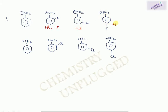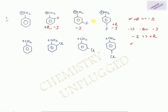At the para position there is again plus R and minus I effect. For fluorine, plus R effect is much stronger than minus I effect. For other halogens like chlorine, bromine, and iodine, minus I effect is much stronger than plus R effect. On the basis of these effects we decide stability of the carbocations — plus R effect provides stability and minus I effect destabilizes. I'll number them one, two, three, and four.